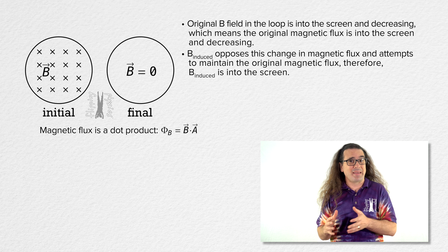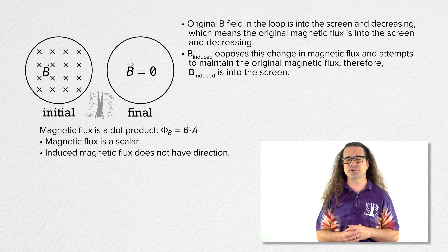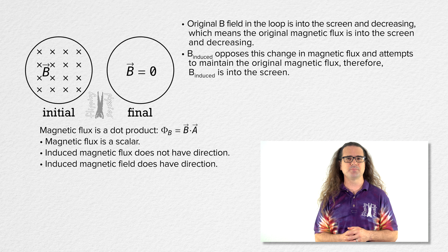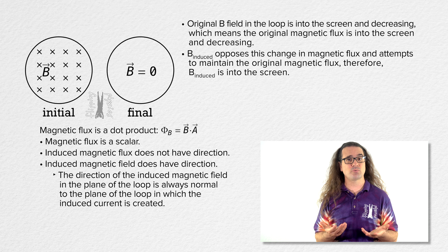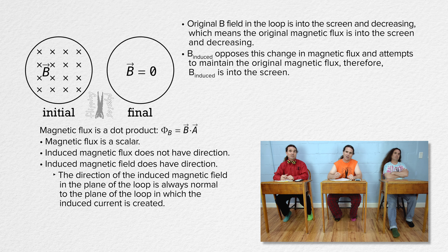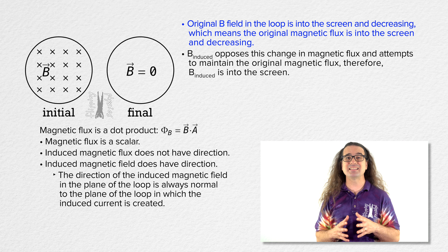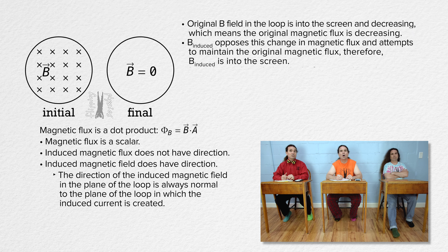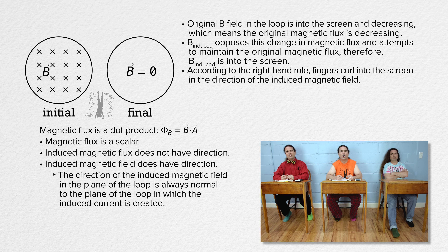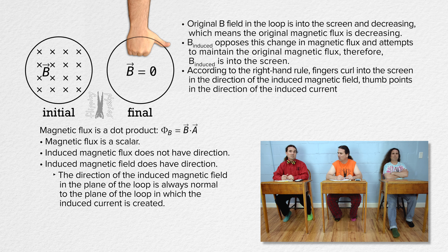Magnetic flux is a dot product, so magnetic flux is a scalar, and the induced magnetic flux does not have a direction. However, the induced magnetic field does have a direction, and the direction of the induced magnetic field in the plane of the loop is always normal to the plane of the loop in which the induced current is created. So please, Billy, start back at the beginning of this example remembering that magnetic flux is a scalar. The original magnetic field in the loop is into the screen and decreasing. The induced magnetic field opposes that change in the magnetic flux, so the induced magnetic field is into the screen to try to keep the magnetic flux constant. According to the alternate right hand rule, the fingers curl in the direction of the induced magnetic field which is into the screen, and the thumb points in the direction of the induced current, which is clockwise from this perspective.